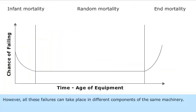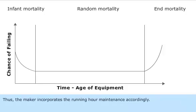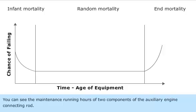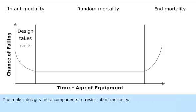However, all these failures can take place in different components of the same machinery. Thus, the maker incorporates the running hour maintenance accordingly. You can see the maintenance running hours of two components of the auxiliary engine connecting rod.